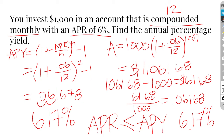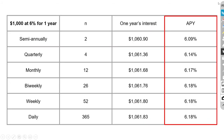Now let's take this scenario a little bit further and look at how different frequencies of compounding affect our APY. The more we compound, the more we're going to earn, which means our APY is going to be higher. However, the thing to notice is that as we get to the end of this chart, even though we're compounding more frequently, our APY seems to be reaching a limit.